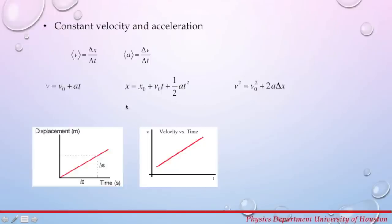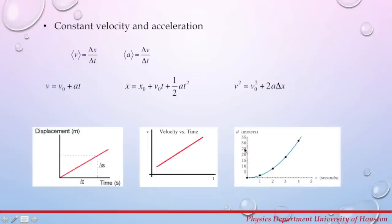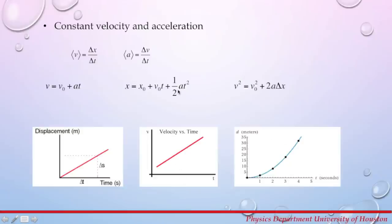Now if you plot position as a function of time for an accelerating object, what do you think this graph would look like? Yes, it would be a parabola. A position versus time graph gives a parabola because of the quadratic term in the equation. So if your object is accelerating and you plot position as a function of time, you will always get a parabola.